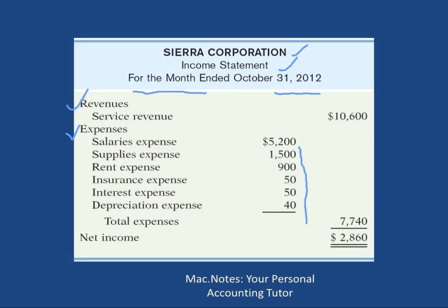There was zero expense on October 1st; by October 31st there's $5,200 in salaries expense, $1,500 in supplies expense, and so on. There are actually two invisible columns here. Revenue is one category so it's carried to the outside column. Expenses, however, we add up — we move them to an inside column, draw a line, and move the total to the outside. The total expenses category is seven thousand seven hundred and forty.